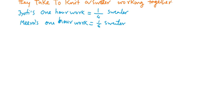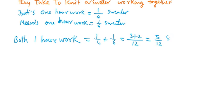Now we will calculate when they will both work together. One hour work is equal to 1 by 4 plus 1 by 6, that is 3 plus 2 is equal to 5 by 12 part of the sweater.